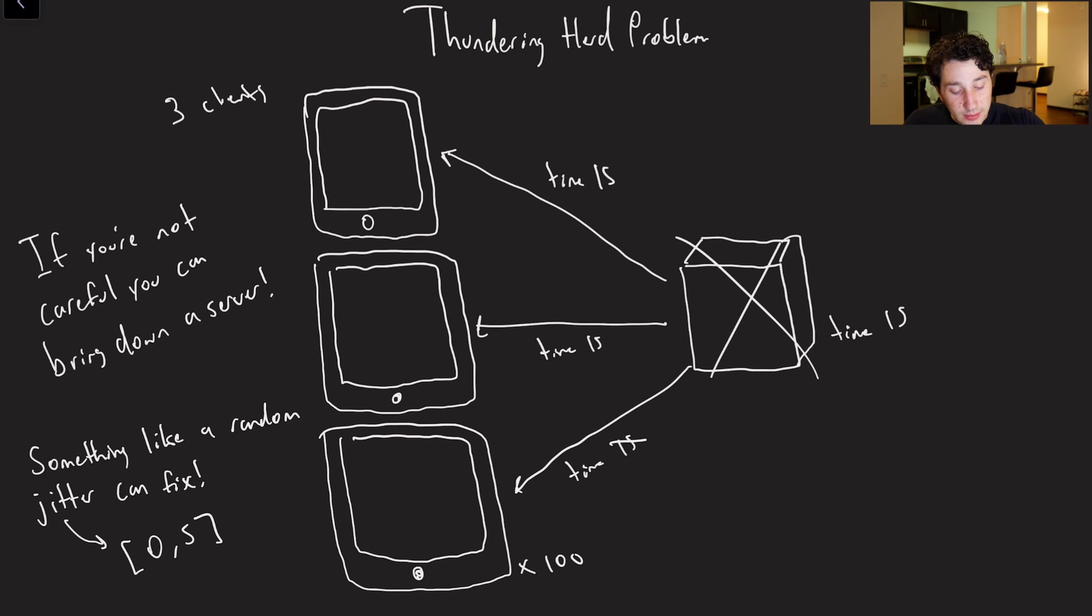So rather than restarting everything at time 15, maybe this guy restarts at time 18, this guy restarts at time 16, and this guy restarts at time 19. And then that way, the connections are actually spread out a little bit, we're more likely to not overload the server, which would be a good thing. I'm not sure this is actually something that practically you'll have to experience too much, but it is something worth considering when you think to yourself, oh, it's so good that we just automatically reconnect to a server.